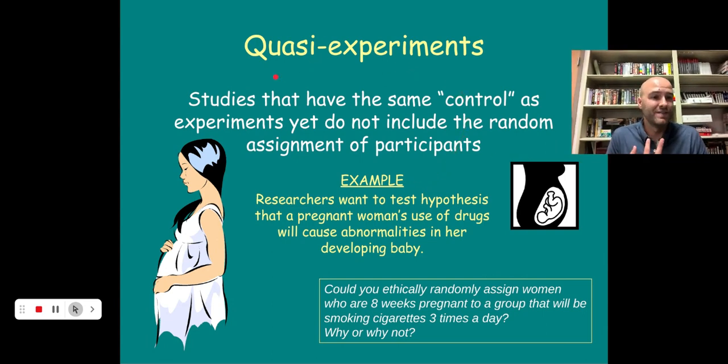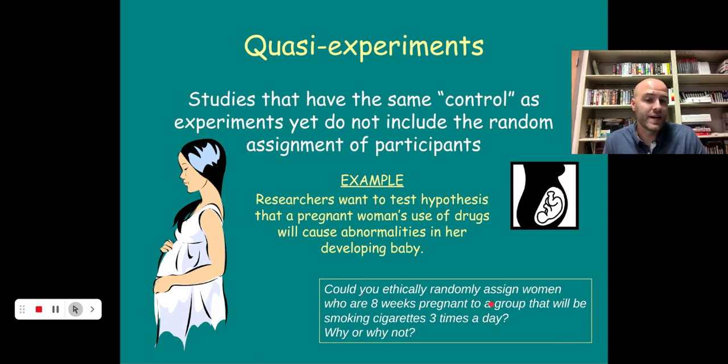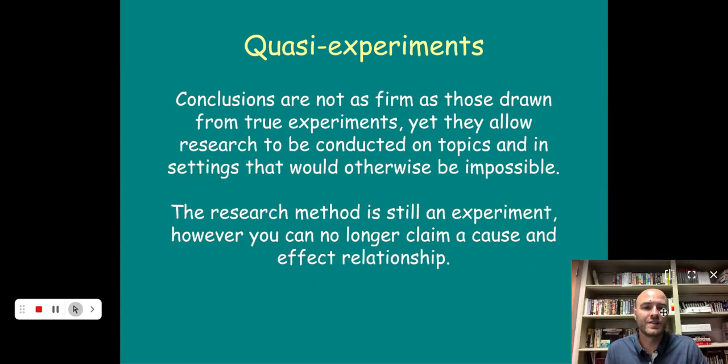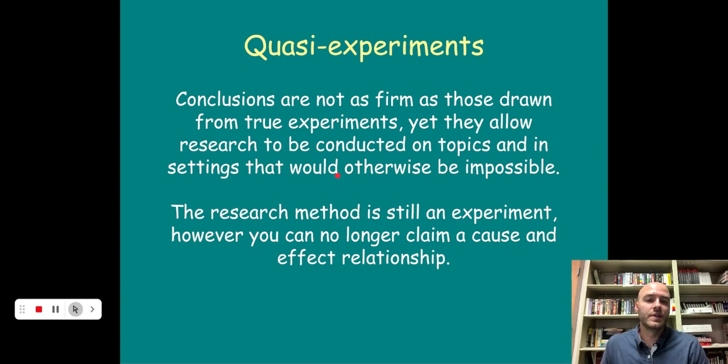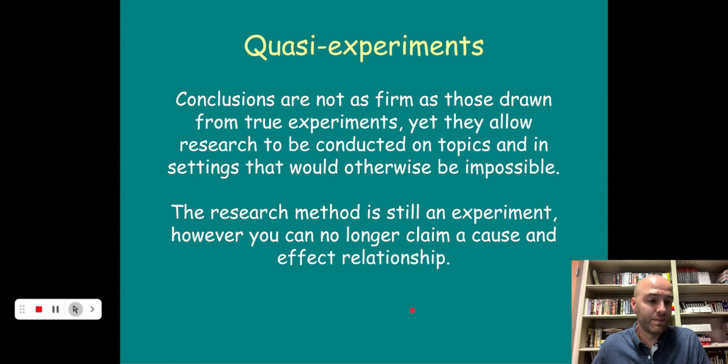So that's what a quasi-experiment is. We're not going to have a random representative sample because we're looking at a specific group of people in a very specific situation that we cannot recreate or reproduce, either ethically or just in general. Could you ethically randomly assign women who are eight weeks pregnant to a group that will be smoking cigarettes three times a day? No, but you can gain a lot of information from analyzing that group and seeing the effects of that situation on them. So conclusions are not as firm as drawn from true experiments, yet they do allow the research to be conducted on topics and in settings that would otherwise be impossible.